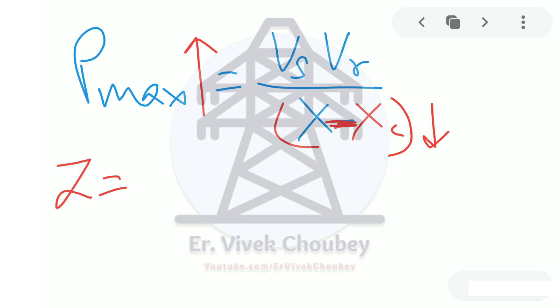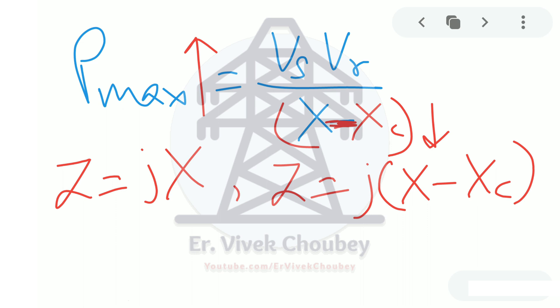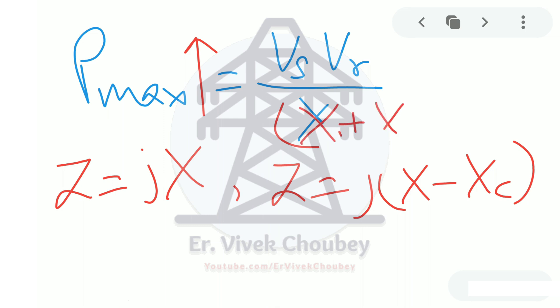The disadvantage of a series capacitor is that it reduces line impedance from jX to jX − XC. If a surge or fault current flows through the line, it finds a very low impedance path, increasing the severity of the fault. Series inductors are not used because they would increase the reactance to X + XL, reducing Pmax — which is undesirable.